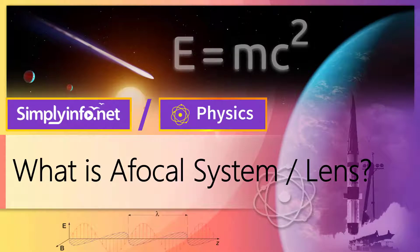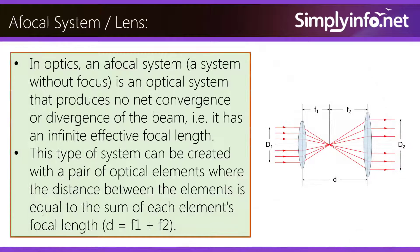What is an afocal system lens? In optics, an afocal system, a system without focus, is an optical system that produces no net convergence or divergence of the beam. That is, it has an infinite effective focal length. This type of system can be created with a pair of optical elements where the distance between the elements is equal to the sum of each element's focal length: d = f1 + f2.